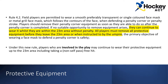The next section of this video deals with the second rule change for 2022, regarding the protective equipment that defenders can wear on a penalty corner. Rule 4.2 states that field players are permitted to wear a smooth, preferably transparent or single coloured face mask or metal grill face mask, which follows the contours of the face when defending a penalty corner or a penalty stroke. Players should remove their penalty corner equipment as soon as they are able to do so after the penalty corner is completed. If no suitable opportunity to remove equipment arises, they can continue to wear it whilst they are within the 23 metre area without penalty.